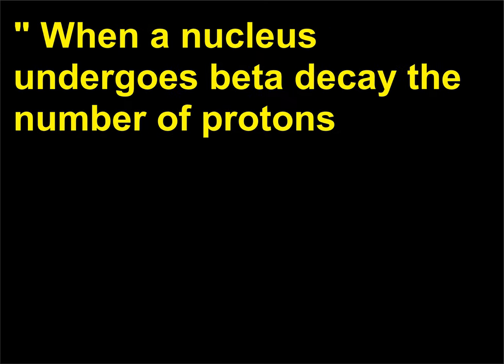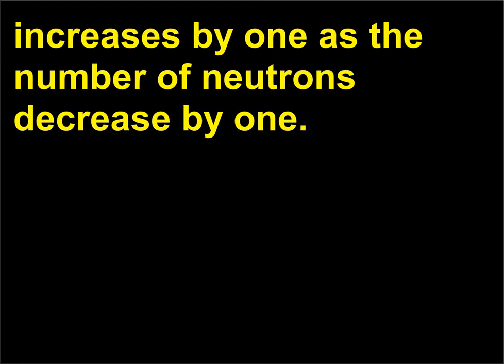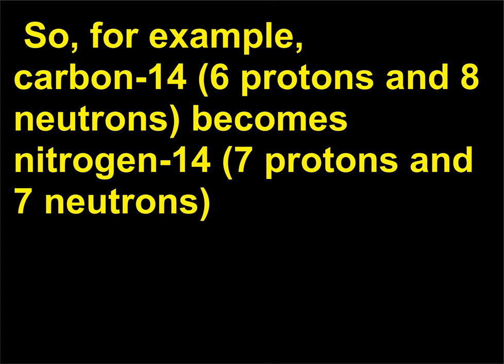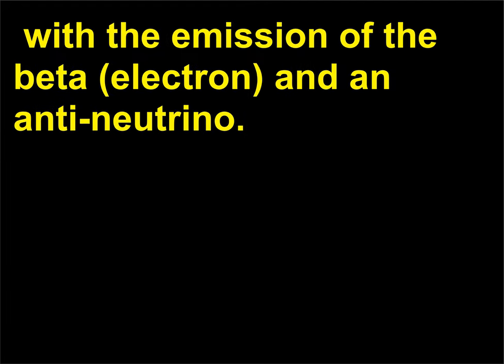When a nucleus undergoes beta decay the number of protons increases by one as the number of neutrons decreases by one. So, for example, carbon-14 (6 protons and 8 neutrons) becomes nitrogen-14 (7 protons and 7 neutrons) with the emission of the beta electron and an anti-neutrino.